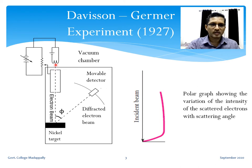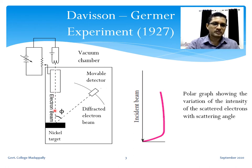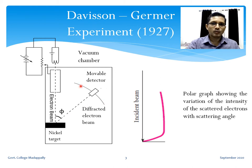The electron beam is accelerated towards the anode, and the anode also acts as the collimator, so we get a narrow electron beam. This electron beam is allowed to be incident on a nickel crystal and it is scattered in various directions. Here we have a movable electron detector that can be rotated along this axis.